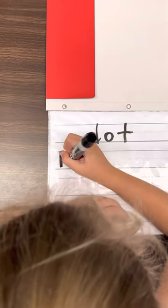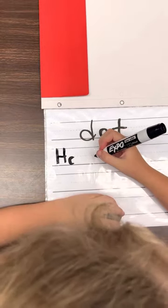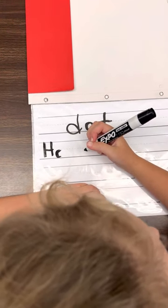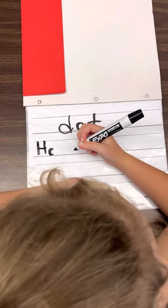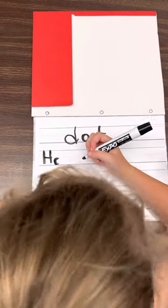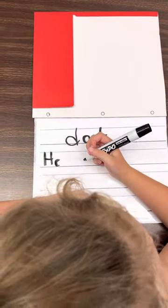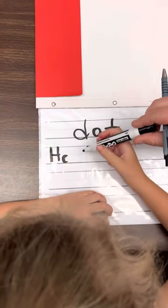He has a job. Hold on a second. So what is the sentence? He has a job. Let's count how many words are in that sentence. He has a job. Okay. So it's going to be four words. You have he. Keep going.